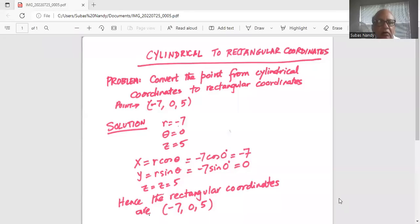Convert the point from cylindrical coordinates to rectangular coordinates. Point is, the cylindrical coordinates are minus seven, zero and five. So r is minus seven, theta is zero, z is five.